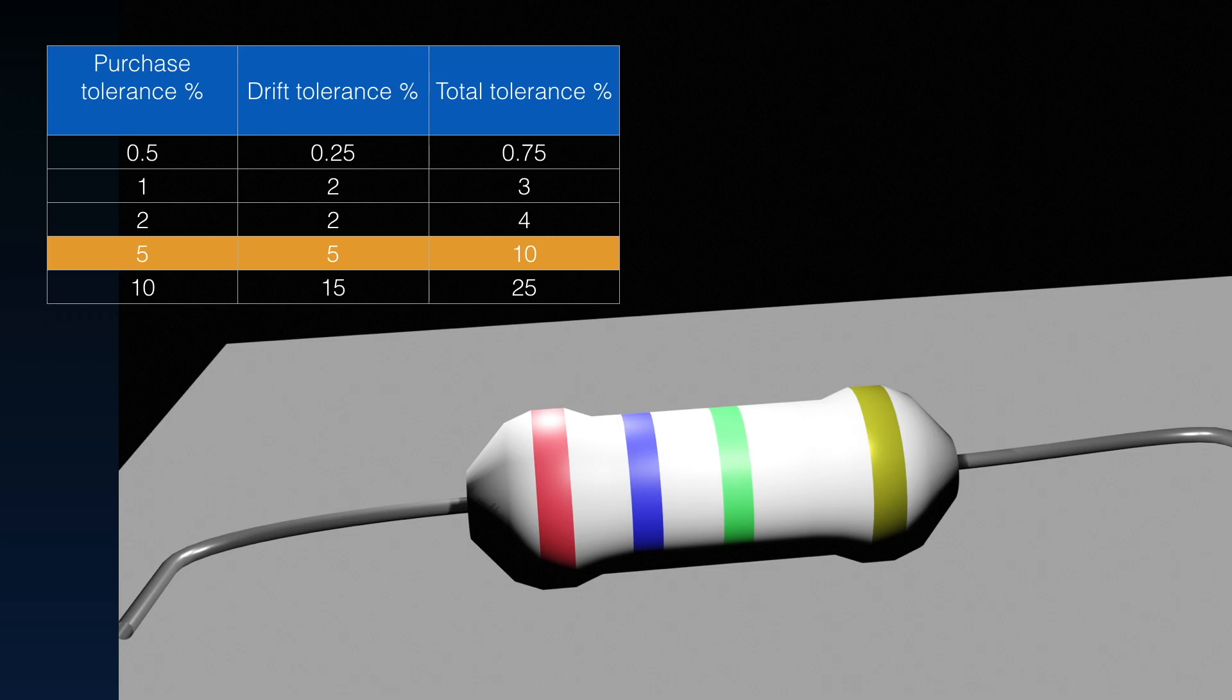Going back to the tolerance, we have the tolerance that we accept when we buy it. Here, we call that the purchase tolerance. In our example, highlighted there with the yellow row, is 5%. But, if we look in the spec sheet for the resistor, we might also find that it has a drift tolerance of 5%. It's outside the scope of this video, and indeed this syllabus, to look into drift in detail. They can be quite complicated - short-term drift, temperature drift, and long-term drift. So, we'll just accept that we have a drift tolerance of 5%. And, the total tolerance, therefore, is 10%.